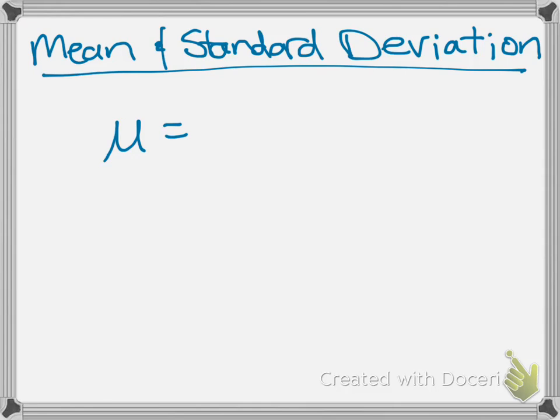To calculate the mean μ, all you have to do is take 1 over p, where p is your probability of success, and that's all there is to finding the expected value for a geometric random variable.